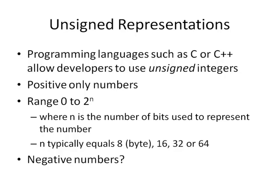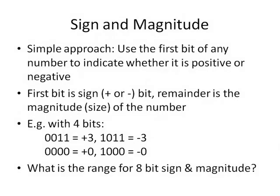What about negative numbers? How do we represent those? The simple approach is to use the first bit of any number to indicate whether it is positive or negative. The normal convention is to use a 1 in the first bit position to indicate a negative number. This first bit is called the sign bit, because instead of representing a numerical value, it represents whether the number is positive or negative. The remaining bits represent the magnitude — the size of the number. So with just four bits, 0011 would be 3, and 1011 would be minus 3.